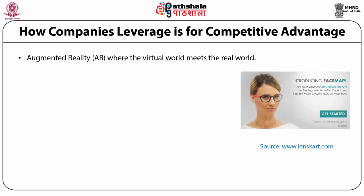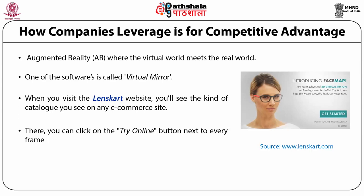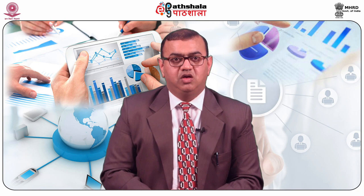Augmented reality is a concept where the virtual world meets the real world — real-world elements are mixed with virtual videos, audios or text. One such software is called Virtual Mirror by Lens Cart. The company sells iWear online and lets you virtually try on different frames. When you visit the Lens Cart website, you see the kind of catalog you see on any e-commerce site. You can click on the 'try online' button next to every frame, then either upload a photo from the computer or use the webcam to take a picture and see how the frame looks on your face. You can swap out frames and check out different looks without having to go to a store.